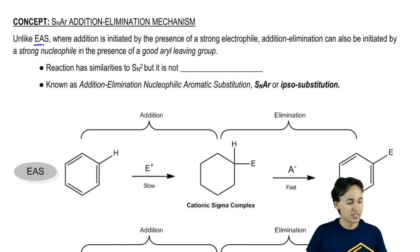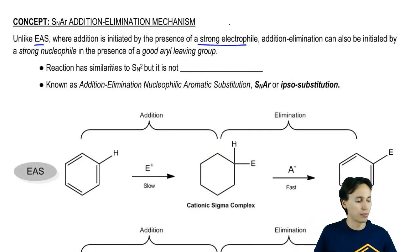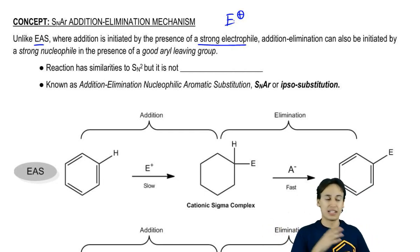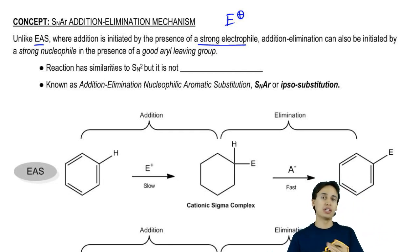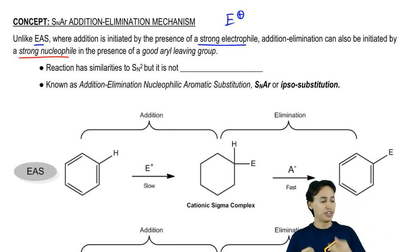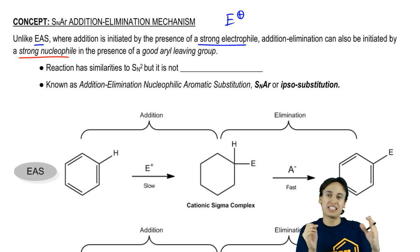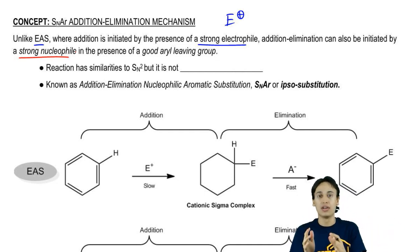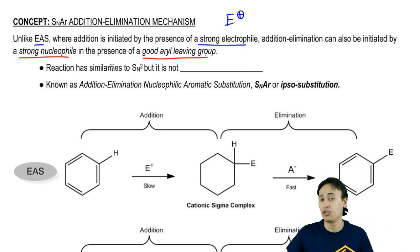Unlike EAS, where the addition step is initiated by the presence of a strong electrophile — we're always trying to make that strong E-plus and then the benzene attacks — it turns out that you can also start another addition-elimination reaction with benzene by a strong nucleophile attacking the benzene. Now, this must be a very strong nucleophile to actually attack such a negative entity. But you also need a good leaving group on your benzene — something that you can kick out when the electrons get there.